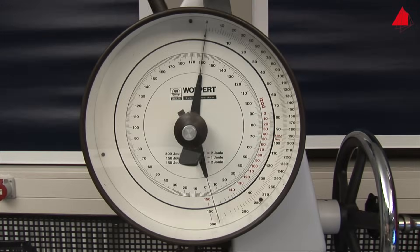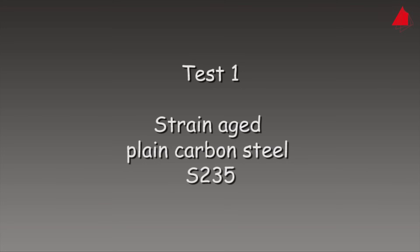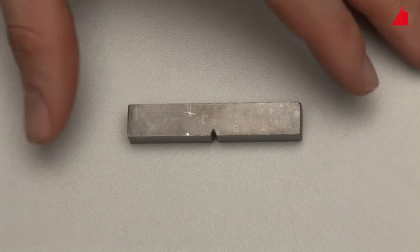The machine is ready for the tests. First test: Strain Aged Plain Carbon Steel S-235. This is our test specimen. It has been machined to standardized size and shape with the characteristic V-shaped notch.